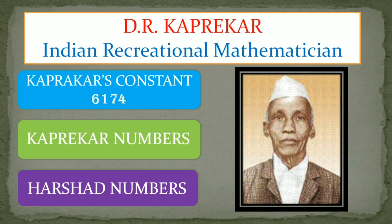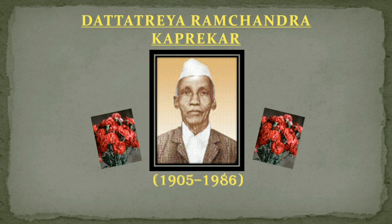An Indian recreational mathematician, he is famous with the discovery of Kaprekar's constant, named after him. His other famous contributions are Kaprekar numbers, Harshad numbers, self numbers, and many more. His complete name is Dattatreya Ramachandra Kaprekar. He was born on 17th January 1905 and he was demised in 1986.